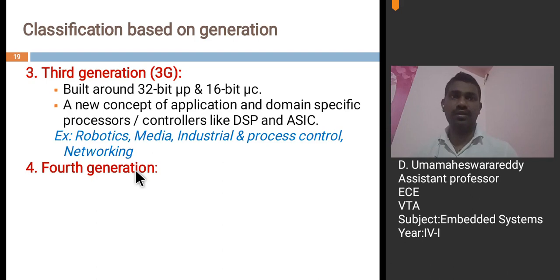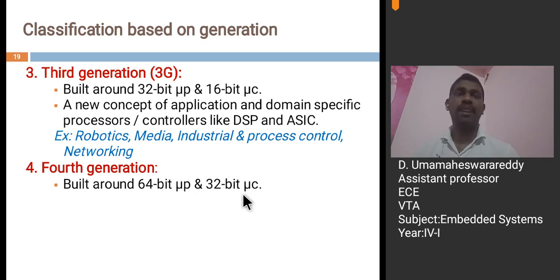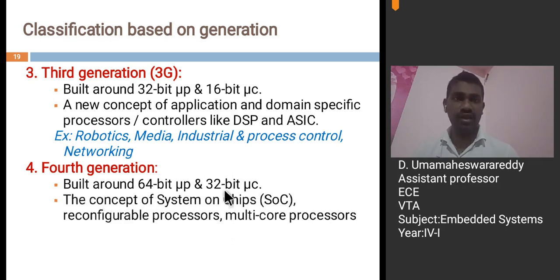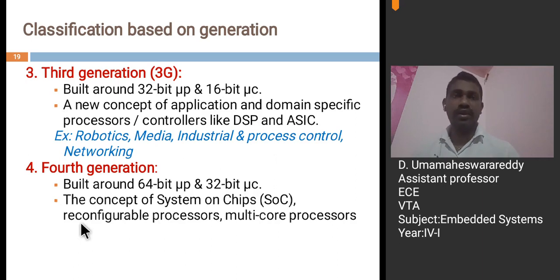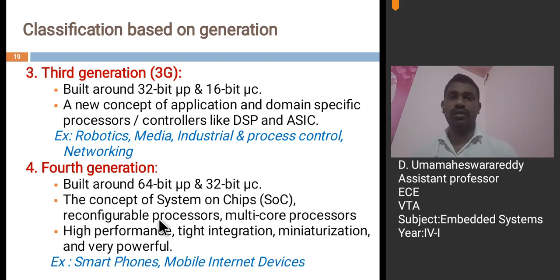Next, fourth generation. These are built around 64-bit microprocessors and 32-bit microcontrollers. The concept of system-on-chip is used, along with pre-configured processors and multi-core processors such as dual-core and quad-core. These offer high performance, tight integration, and are very powerful compared to other generations. For example, smartphones, mobile internet devices, and Wi-Fi modules come under the fourth generation.